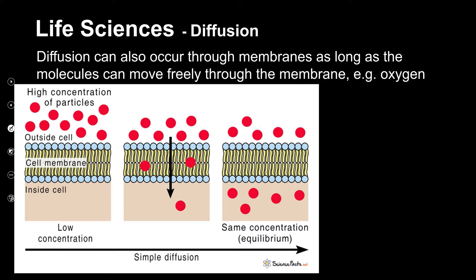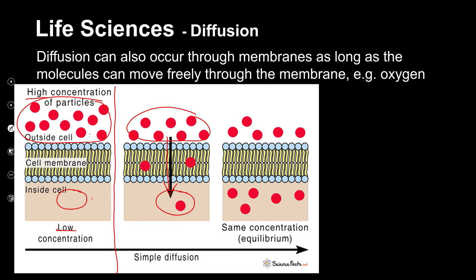Looking at this diagram: here is the experiment at the beginning, with a high concentration of particles — say oxygen — outside the cell and nothing inside the cell, creating a big concentration difference. The particles then move through the membrane from the high concentration to the low concentration. After time has passed, diffusion will stop because we have exactly the same concentration inside and outside the cell.